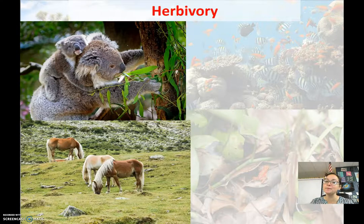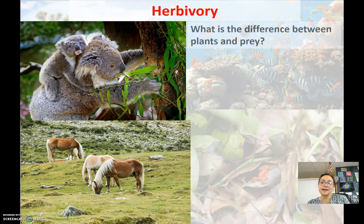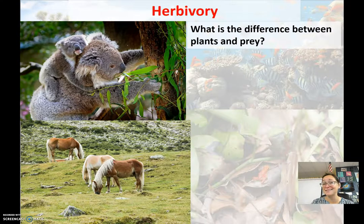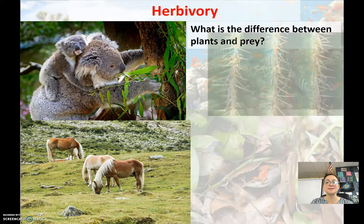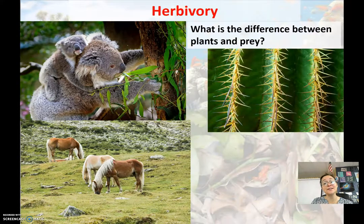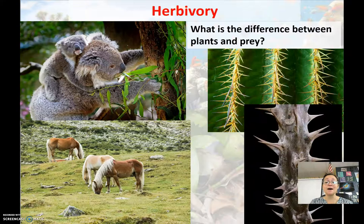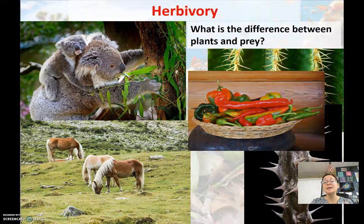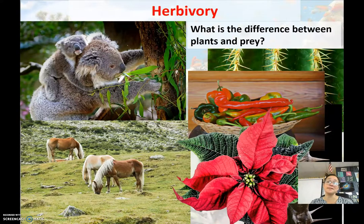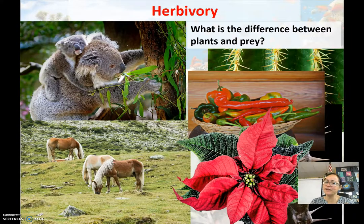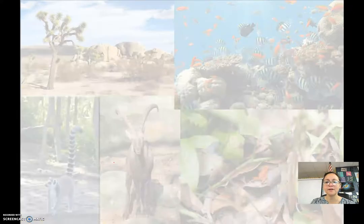Another interaction between species is herbivory — herbivores eating plants. The difference between plants and prey is that plants can't escape. So they've evolved certain defenses like spines, thorns, capsaicin peppers that are really spicy, or even poisonous compounds. Plants have evolved different protective strategies and defenses against herbivores.